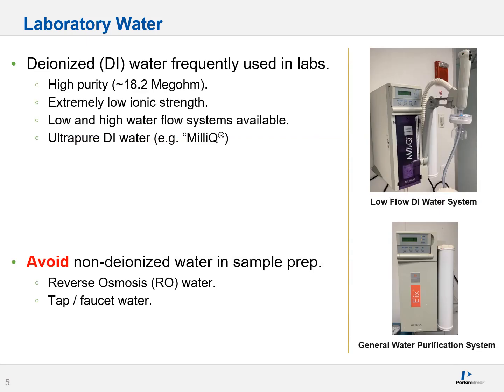Please avoid non-deionized water in sample preparation systems. You may encounter reverse osmosis or RO water — this is usually not lab-grade water, unlike deionized water. It's used for rinsing and that's really about it. You may also encounter tap and faucet water, which is extremely dirty water — high in salts, organisms, and who knows what else. This is rarely used in any type of lab manufacturing or research process.